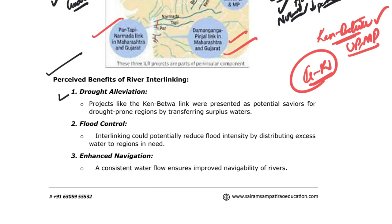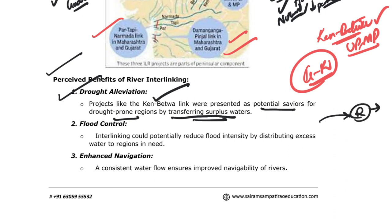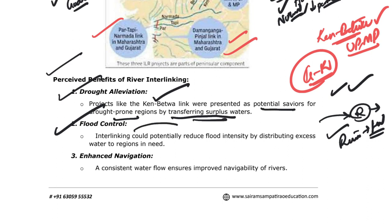Coming to the important benefits of the river interlinking project: the first benefit is drought alleviation. Projects like the Ken-Betwa link are seen as potential saviors for drought conditions by transferring surplus river water from water-rich areas to drought-affected regions, thereby reducing drought conditions.